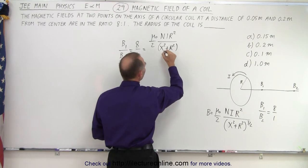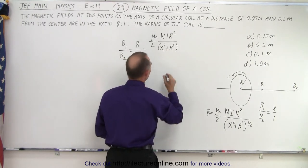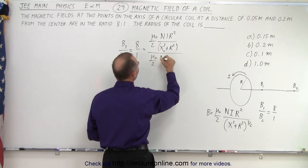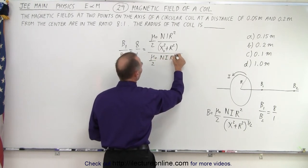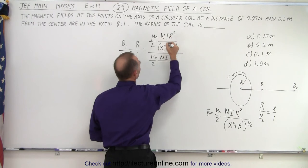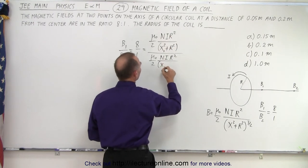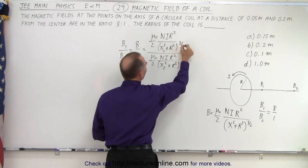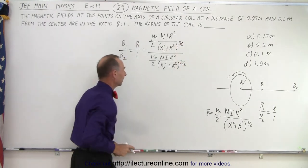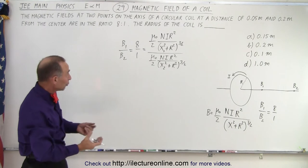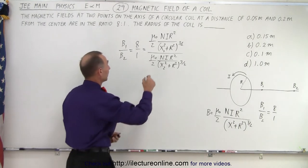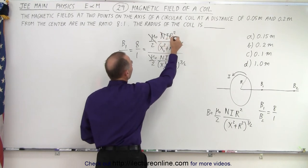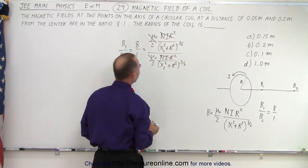Now notice that would be x sub 1 squared. And we divide that by mu sub naught divided by 2 n i r squared divided by x 2 squared plus r squared to the three halves power. So notice that in the numerator and denominator a lot of things are similar. We can get rid of mu sub naught divided by 2. We can get rid of n i r squared.